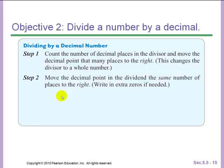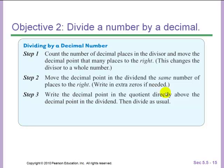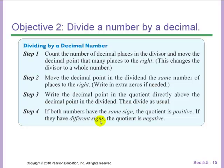Once you do that, you move the decimal point in the dividend the same number of places to the right. Write in extra zeros if needed. Write the decimal point in the quotient directly above the decimal point in the dividend, then divide as usual, and check your signs.